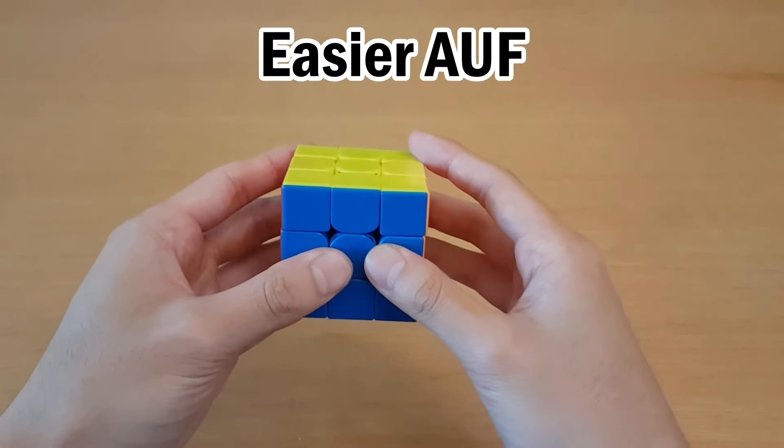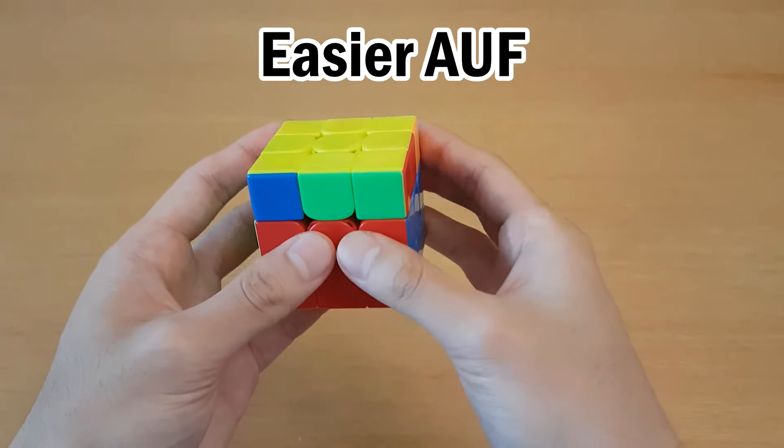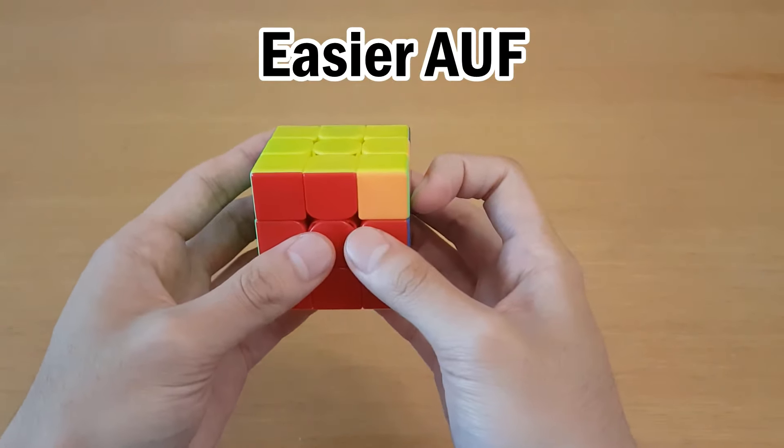Also, because you can start it with both thumbs on the front, it makes some finger tricks a lot simpler. When you use either of the other two, if it's like this, you have to do a U move to begin, and then start the algorithm. Now, this isn't the best way to do it, because then you'll have to re-grip right after it.